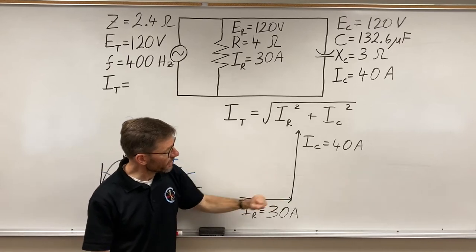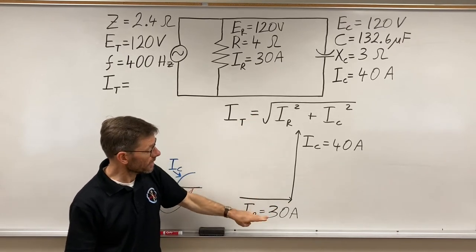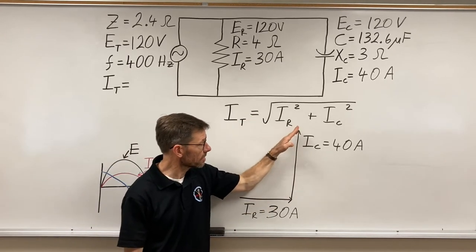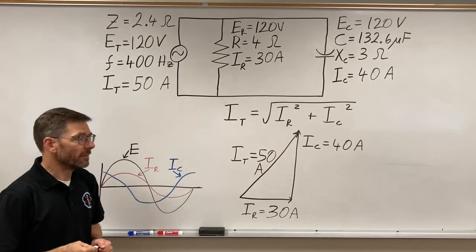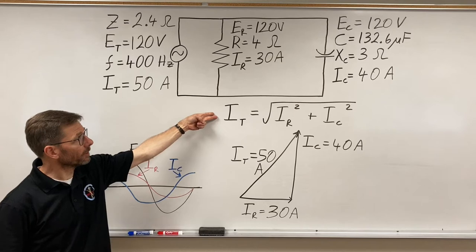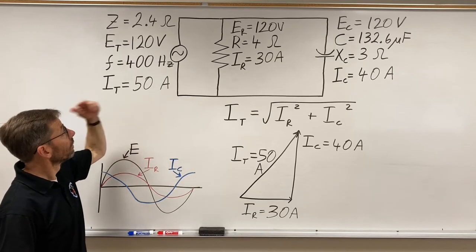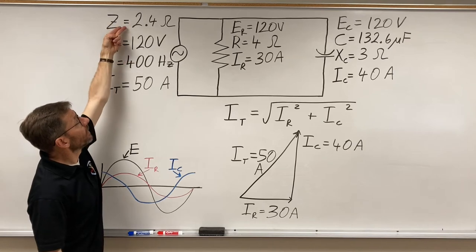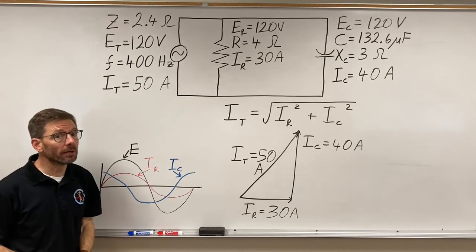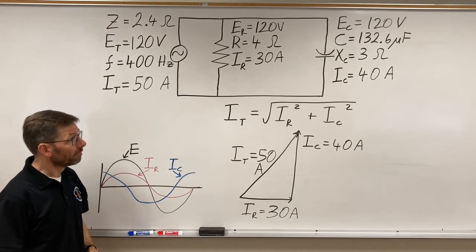We can also look at them as vectors, because that's what Pythagorean is. A squared plus B squared is C squared. And 50 amps, whether we use the formula or, let's confirm, 120 divided by 2.4, 50 amps.